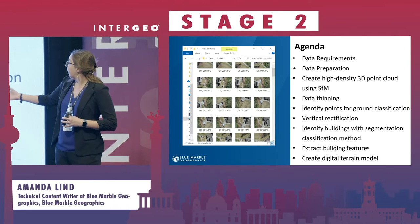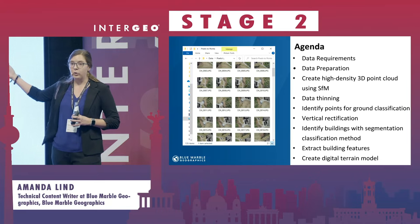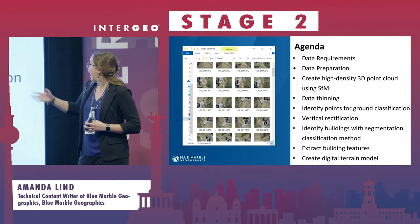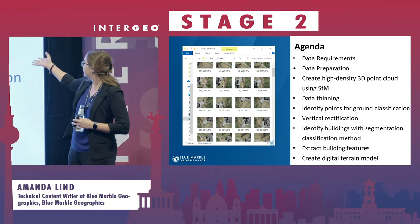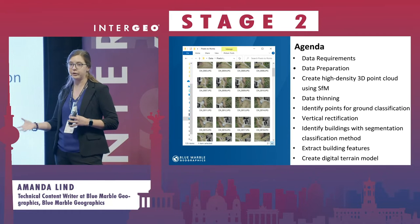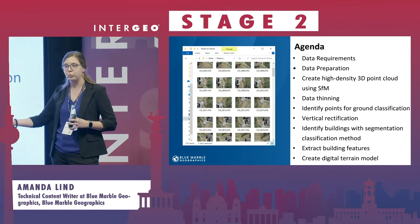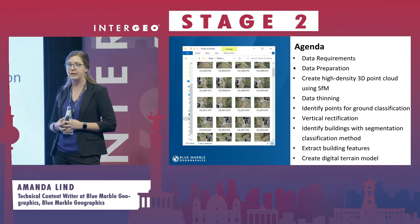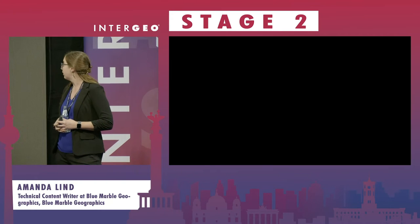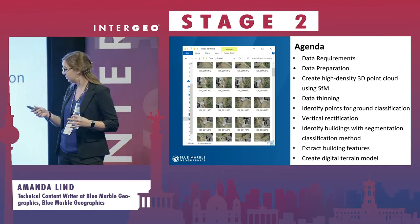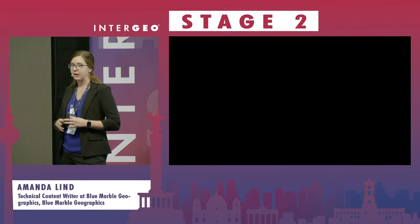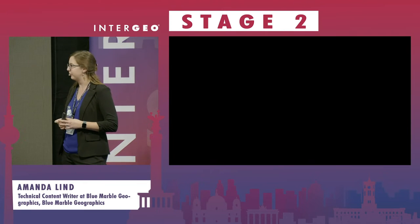So the agenda — what I'm going to cover today are the data requirements for creating these outputs, how they should be prepared in the process of creating high-density point clouds using structure from motion, which is what Pixels to Points is based off of. And then once we've created the data, we're going to thin it and then process the point cloud, identifying the points for classification.